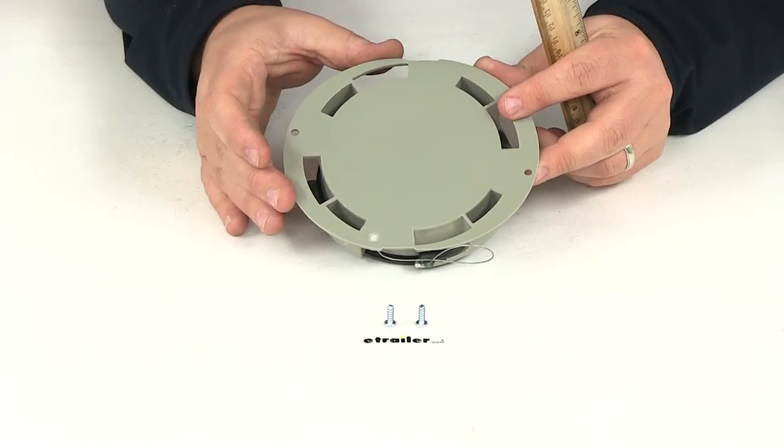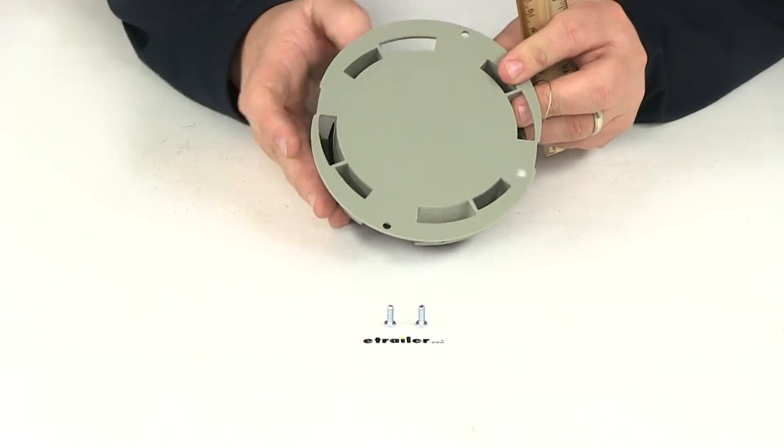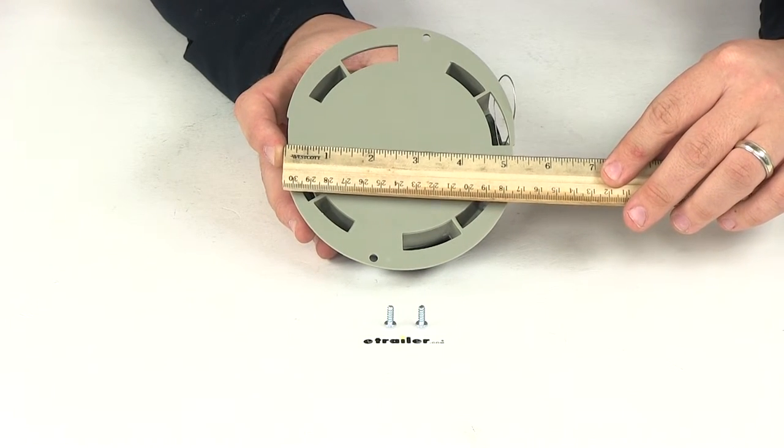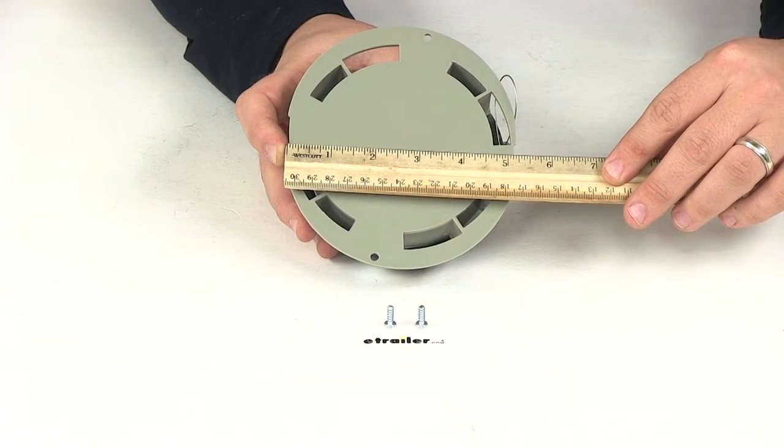Now this is a little bit elongated. It's not a perfect circle. So if we measure from edge to edge going in this direction, it's going to give us a measurement of five and three sixteenths of an inch.